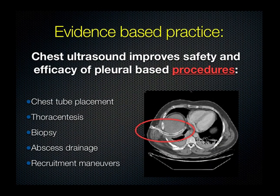Chest ultrasound has definitely been shown to improve the safety and efficacy of pleural-based procedures. You can tap out what you think is dullness where a pleural effusion should be, but you might be wrong and instead place the chest tube directly into someone's liver. When you have the opportunity to use ultrasound to localize fluid in real time, there's really no reason not to use it.